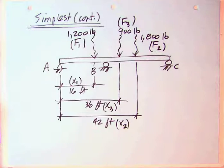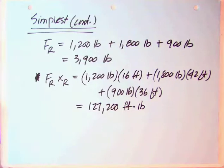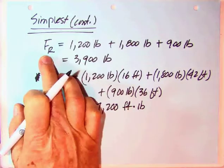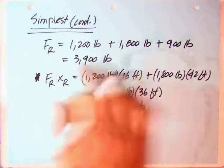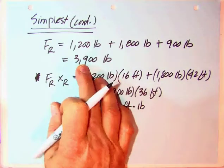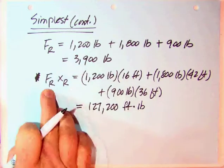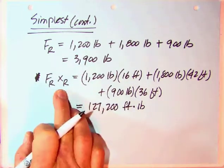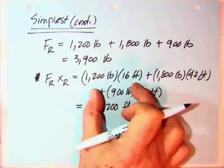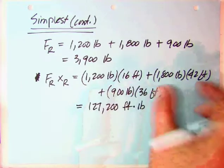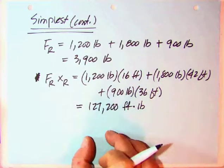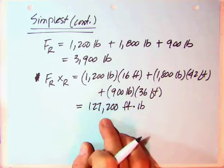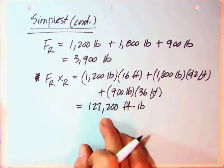Okay, so what we're going to do is just substitute those numbers into the equations that we have. Well then if we take F sub R is the sum of the three forces, 1200 plus the 1800, that's 3000, plus another 900, gives us 3900 as our total. And then if we do F sub R times X sub R, the 1200 times its distance F1, X1. For two, F2 times its 42 feet. And lastly, the 900 times its distance, 36. Add all those up and get 127,200 foot-pounds.